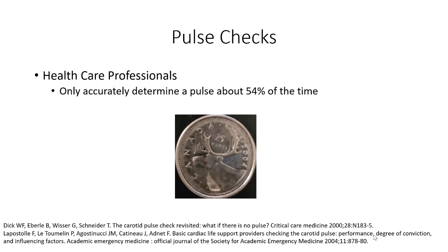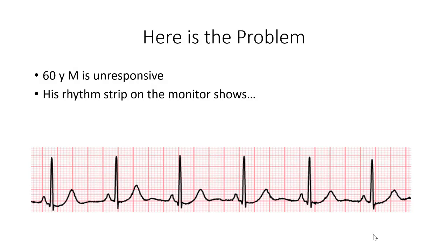You might as well flip a coin to determine if the patient has a pulse. So even if this patient doesn't have a palpable pulse, they still may not be in true PEA. About half may have a pulse that you are not feeling, and they may actually be alive. This is called pseudo-PEA. It looks and feels just like PEA, but it is not. The ACLS guidelines just assume that healthcare professionals are accurate in their pulse check assessments and that everyone who we can't feel a pulse in is in true PEA. If only it were that simple.